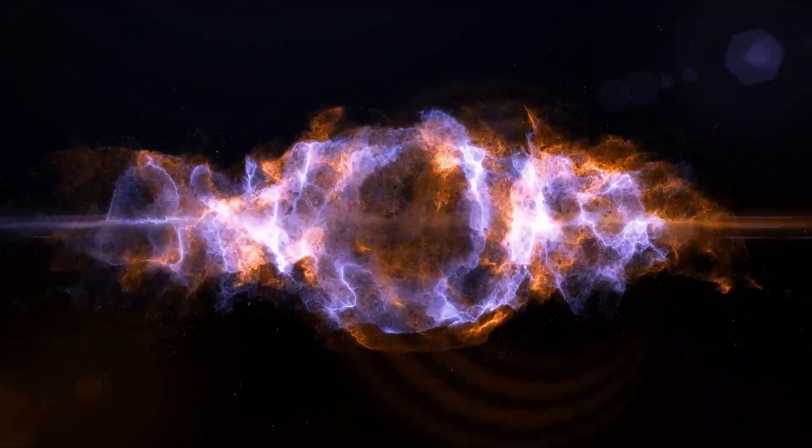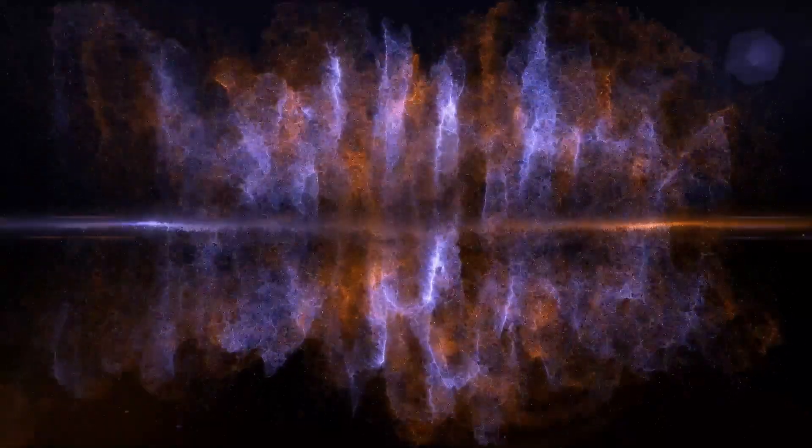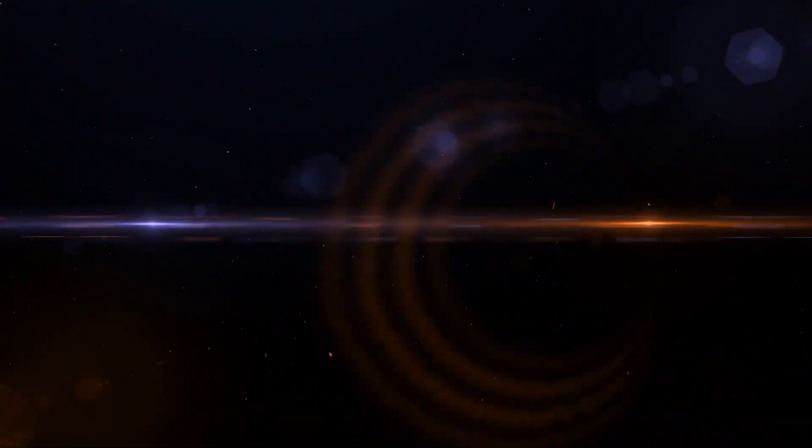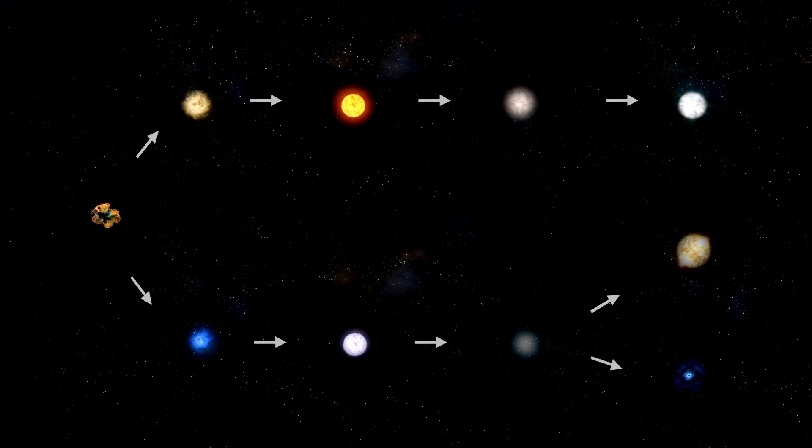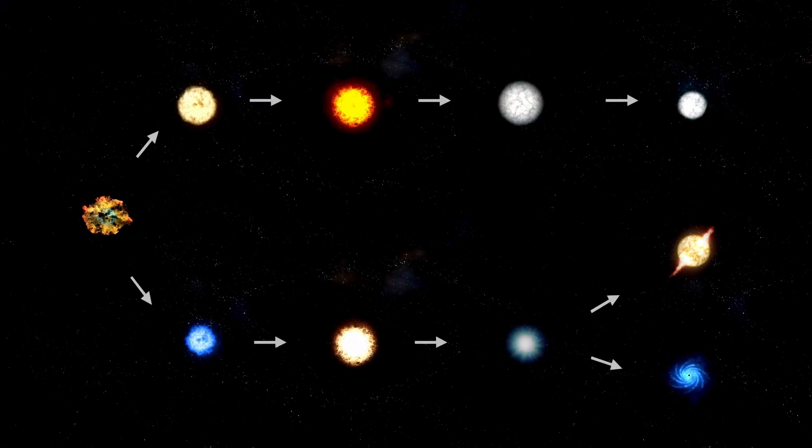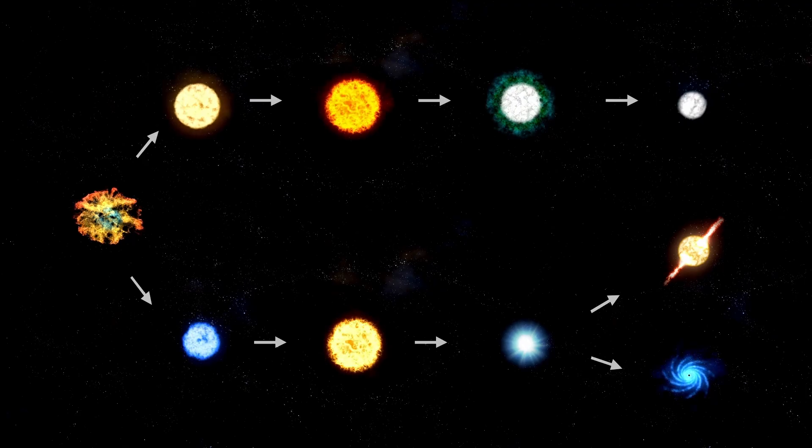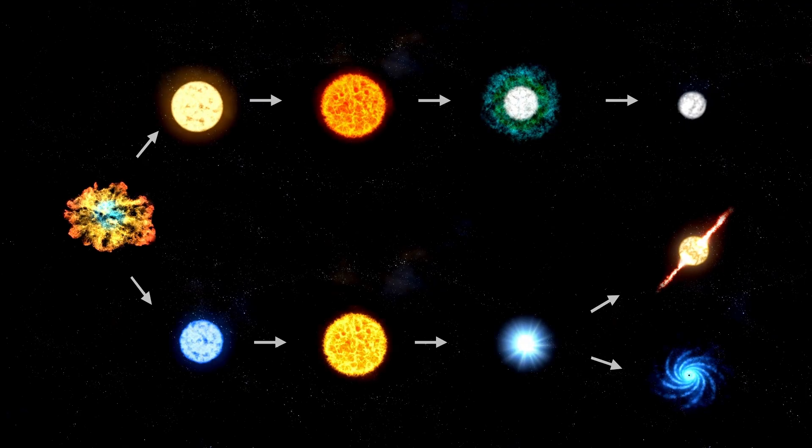And then, just as the world began to ask those questions, 3i Atlas changed course. It adjusted its trajectory, moving closer to the inner planets. That single act, calculated smooth and intentional, reshaped the narrative. It wasn't just passing through anymore. It was approaching, not by accident, but with purpose. And that purpose, still unknown, was headed straight for us.